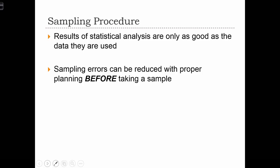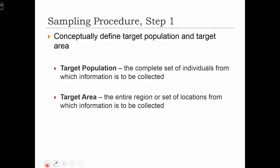A sampling procedure is a set of steps that we take in order to ensure that our sample is of good quality. Sampling errors can be reduced with proper planning before taking a sample. We're going to go over a six-step procedure for sampling.